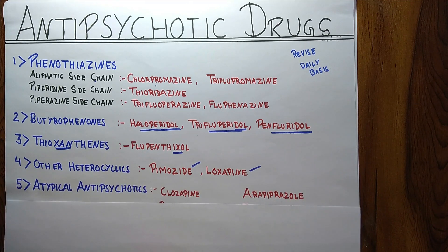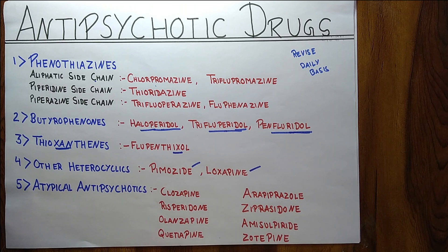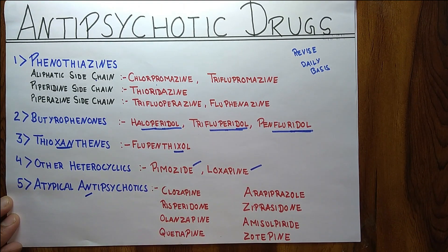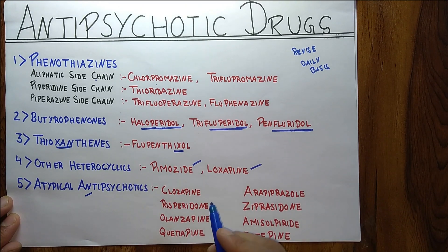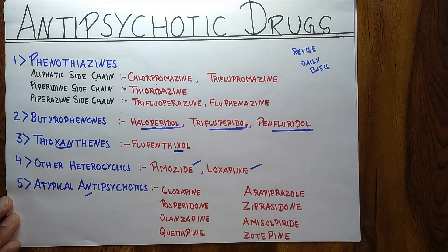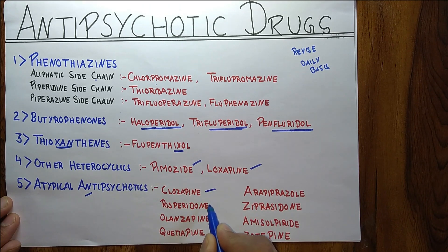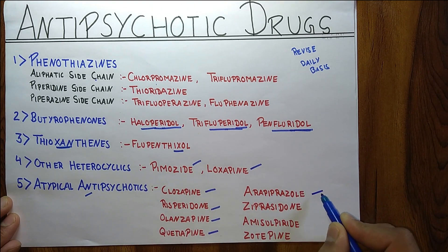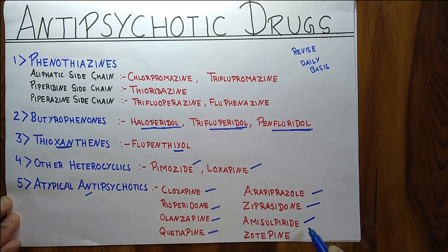The next and last class is Atypical Antipsychotics. It is a very important class and there are around eight drugs. How to learn them is a big task. There are eight drugs: Clozapine, Risperidone, Olanzapine, Quetiapine, Aripiprazole, Ziprasidone, Amisulpride, and Zotepine.